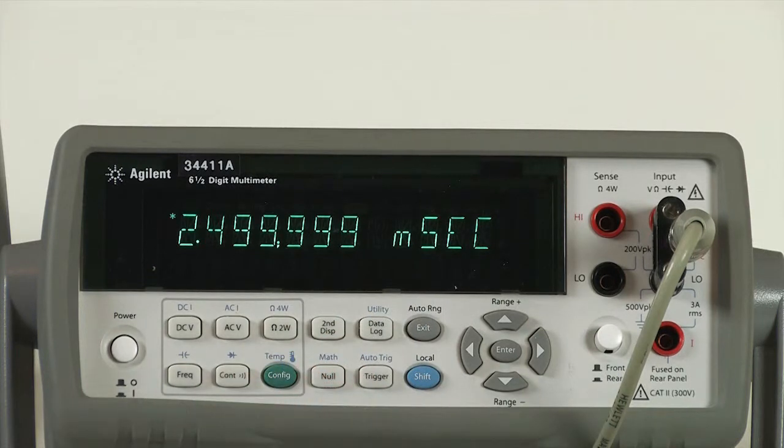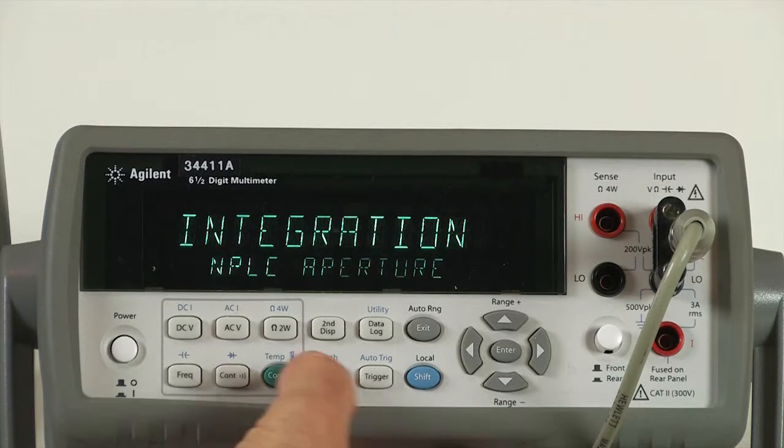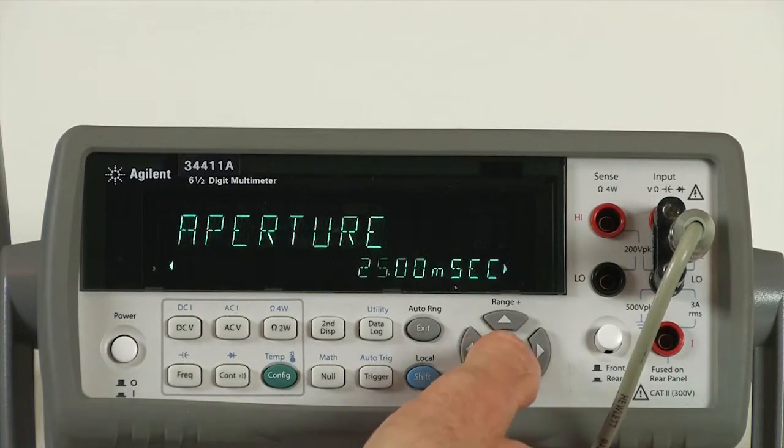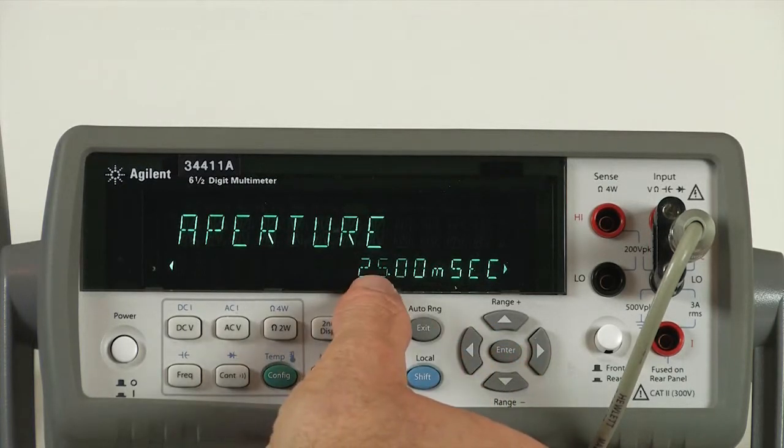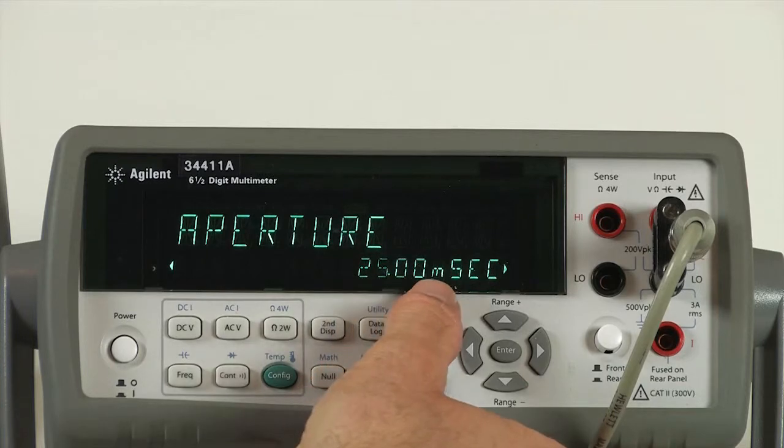So what we'd like to do is integrate over the period of the noise source, one or more periods. So I'm going to go ahead and set up the aperture on our DC measurement to integrate over 10 cycles of the noise. That'd be 25 milliseconds.